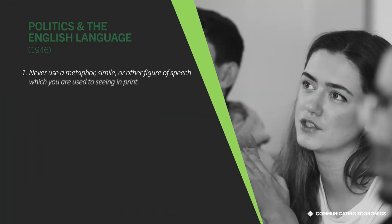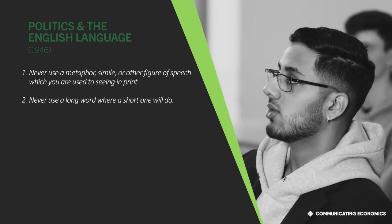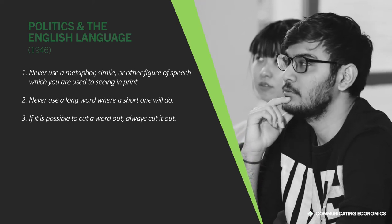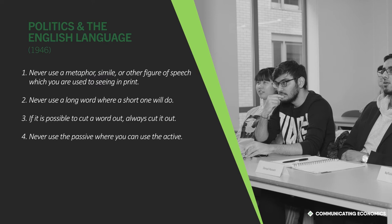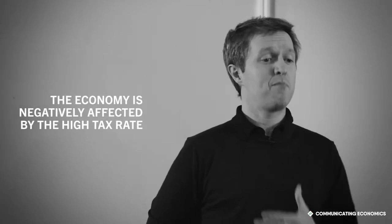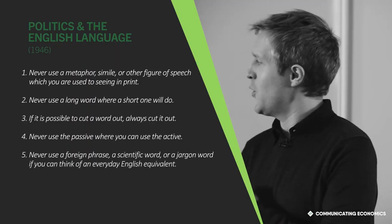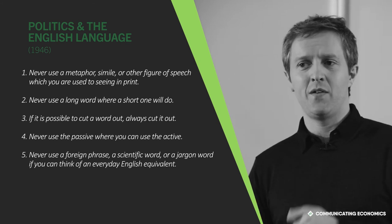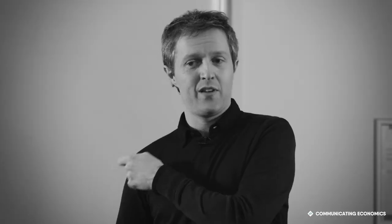George Orwell came up with six rules. Never use a metaphor, simile or other figure of speech which you are used to seeing in print. Never use a long word where a short one will do. If it is possible to cut a word out, always cut it out. Never use the passive where you can use the active — for example: 'The economy is negatively affected by the high tax rate' is passive; 'High taxes are damaging the economy' is active. Never use a foreign phrase, a scientific word or a jargon word if you can think of an everyday English equivalent — something relevant to economics. Break any of these rules sooner than say anything outright barbarous.